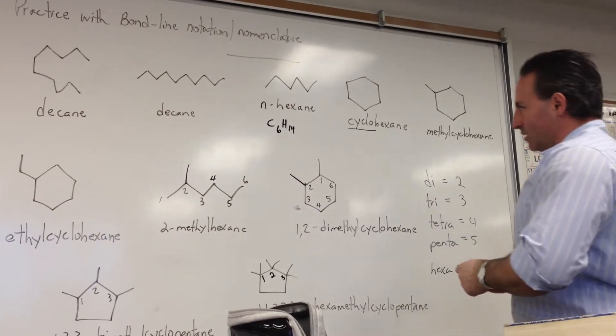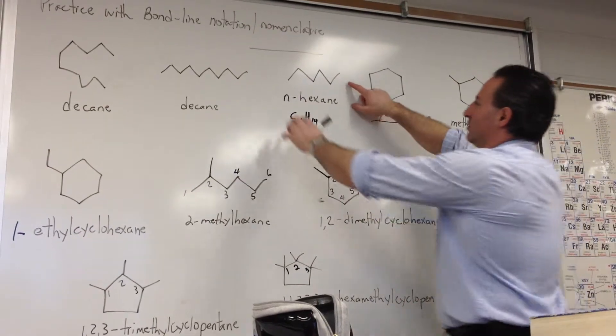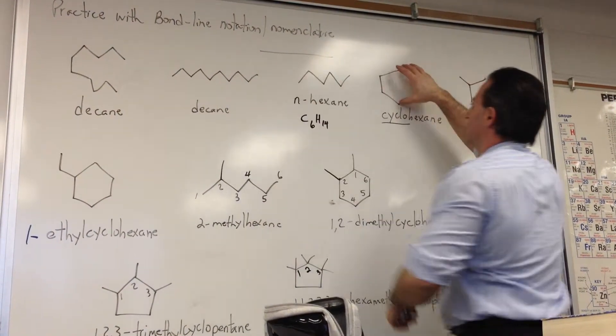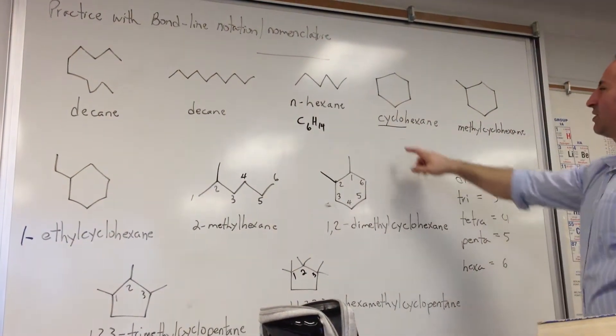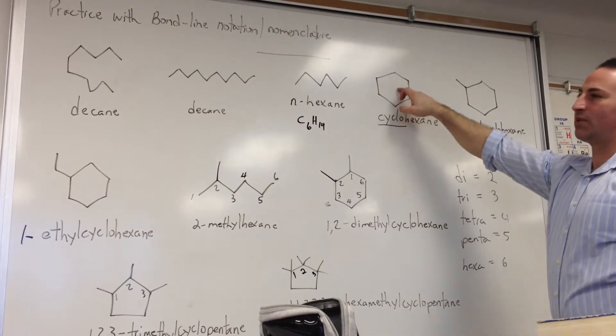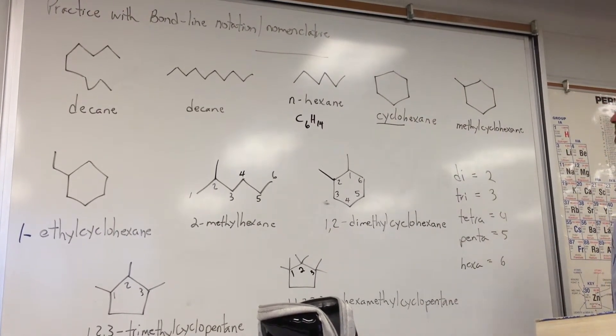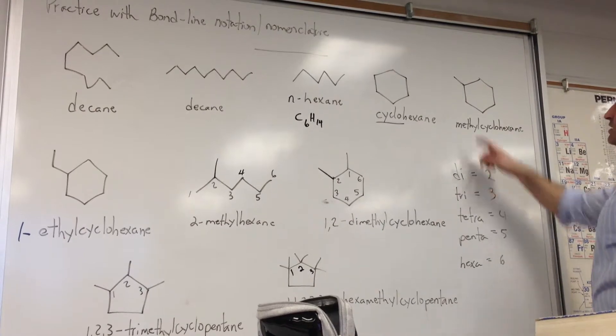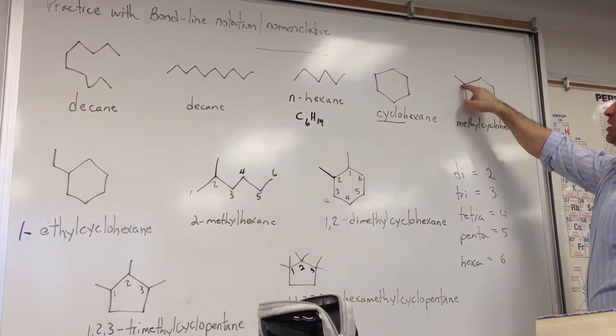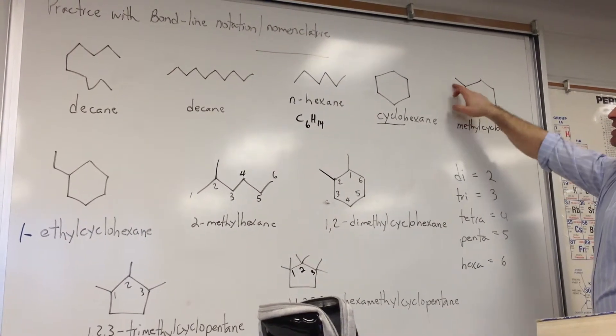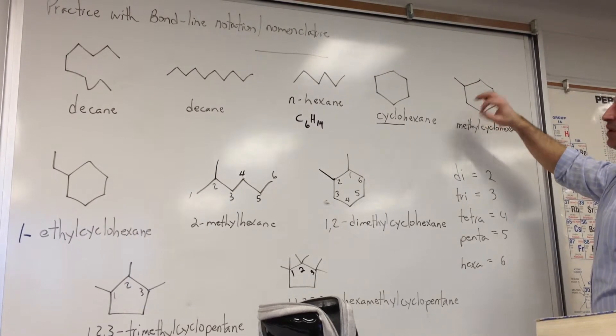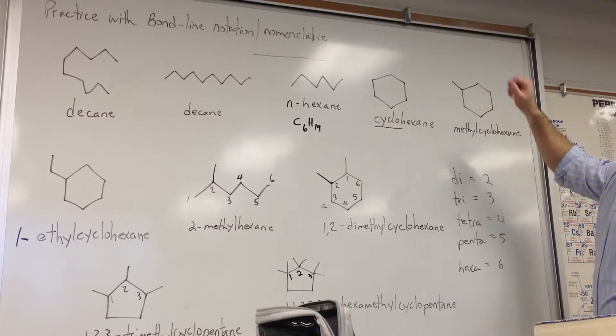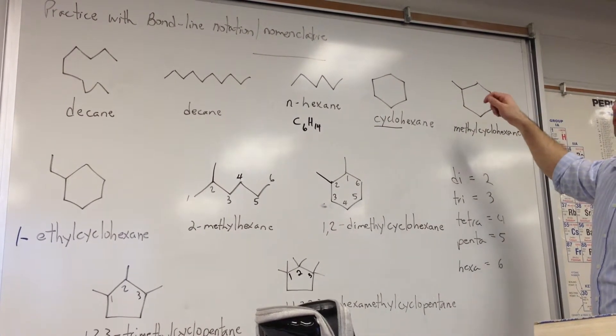If we were to take hexane and join these two ends, we would get cyclohexane, and the prefix cyclo is added whenever a molecule is cyclic. If we add substituents, here you might be tempted to call this methane cyclohexane, but whenever you add a substituent, you drop the ane ending and substitute it with yl.